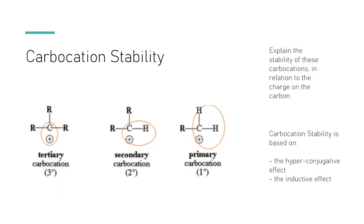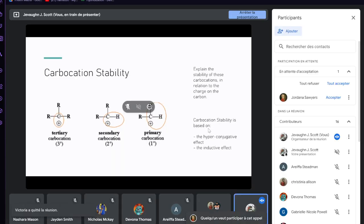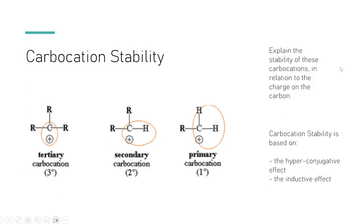Before we get into all of that, we have to understand carbocation stability. Carbocation stability needs to be covered because a lot of these reactions depend on the stability of carbocations. Carbocations are cations formed from carbon species. We tend to have three different categories of carbocations, and their stability depends generally on the inductive effect and the hyperconjugative effect.